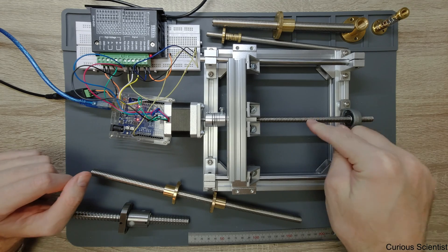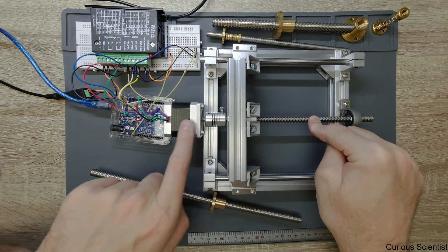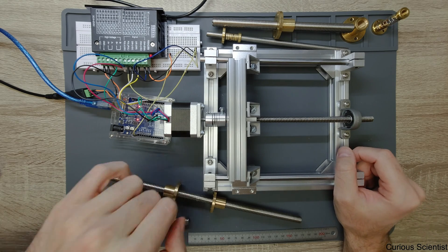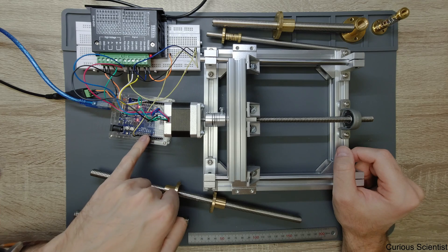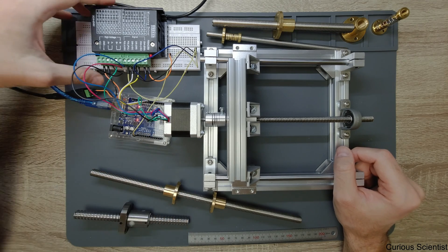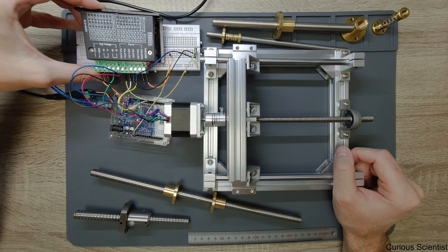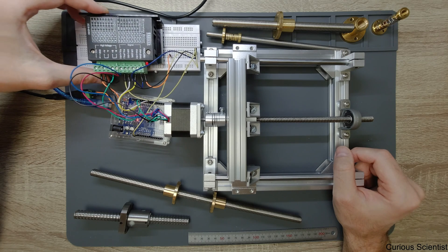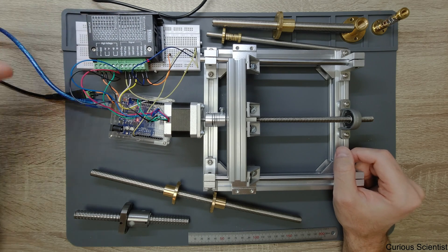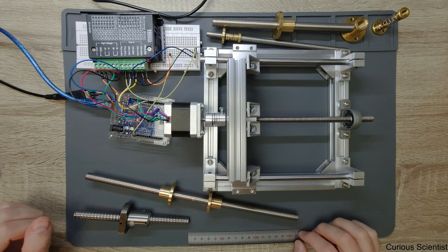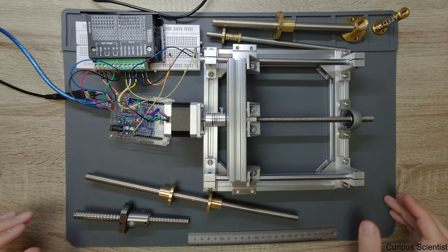Two millimeter lead but four starts, so one rotation will cause eight millimeter movement in this direction. Just a bearing to support this guy here, a coupler, a small NEMA 17 stepper motor, an Arduino Uno. Then we have this TB6600 stepper driver connected to a regulated power supply. That's all what we have.